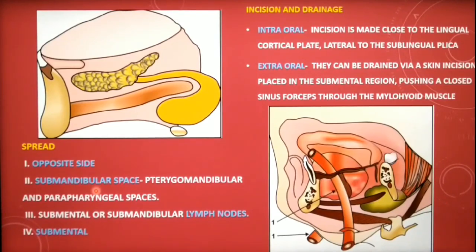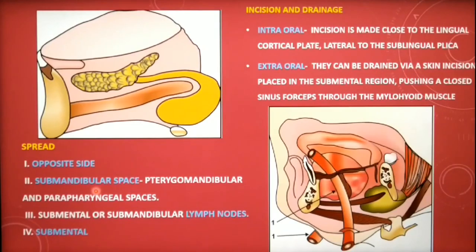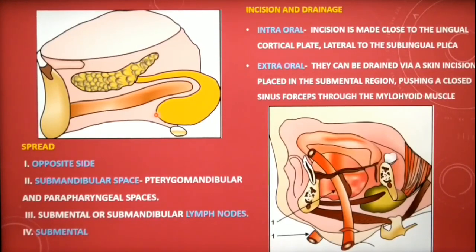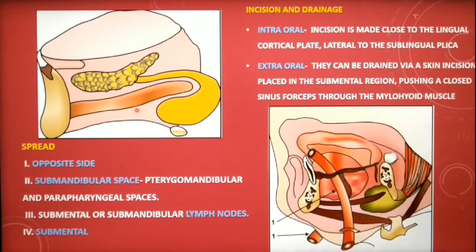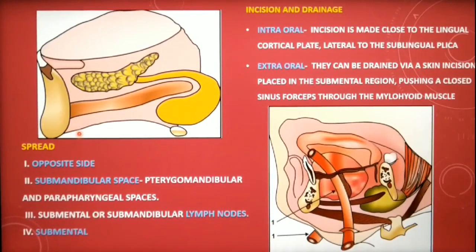Spread of infection from the sublingual to other spaces is possible. The infection always crosses the midline and can affect the opposite side. Infection from the posterior inferior part can spread around the submandibular gland into the submandibular space. Infection can also spread via lymphatics to the submandibular lymph nodes. The sublingual space is separated from the submandibular space by the mylohyoid muscle anteriorly, so spread to the submandibular region most often occurs via lymphatic spread.